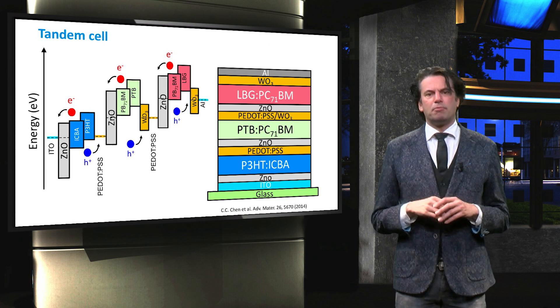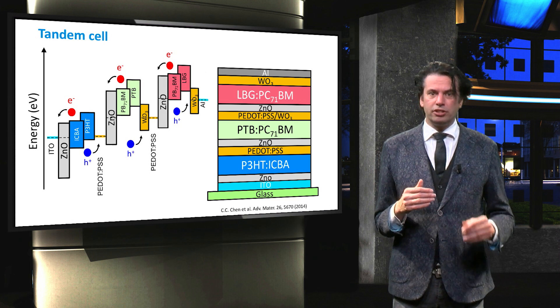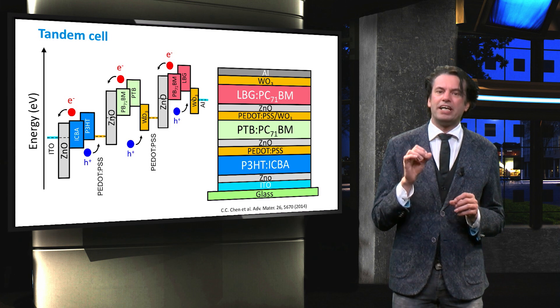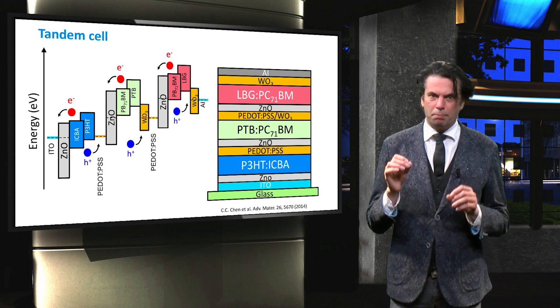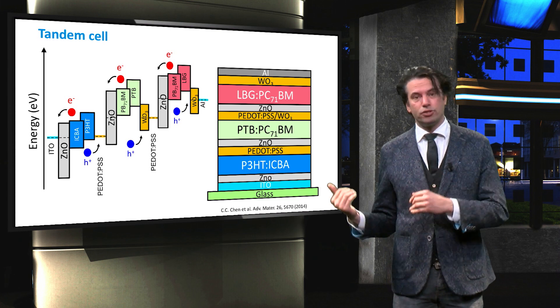The band diagram of such device is illustrated in the figure. The tunnel recombination of the electrons and holes takes place at the interface between the PEDOT:PSS and the zinc oxide, between both the top and the middle cell, and the middle cell and the bottom cell.